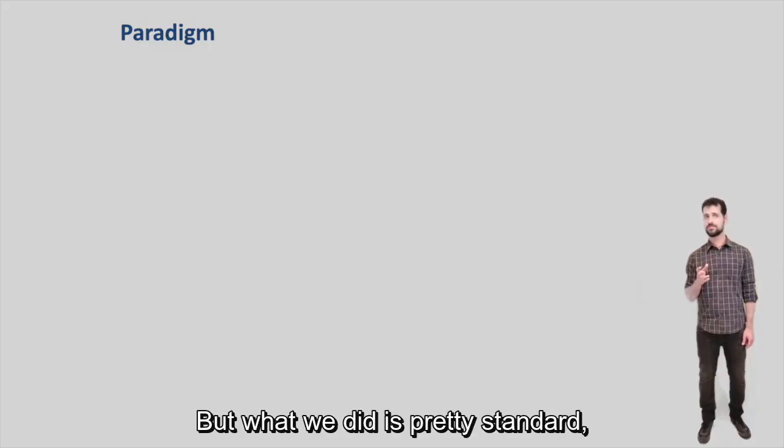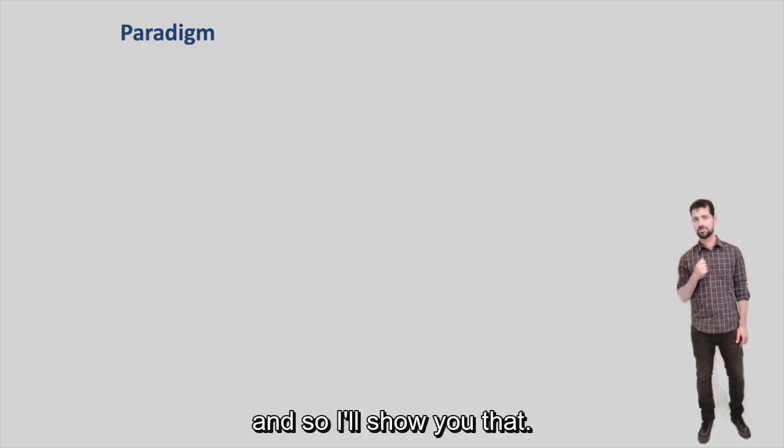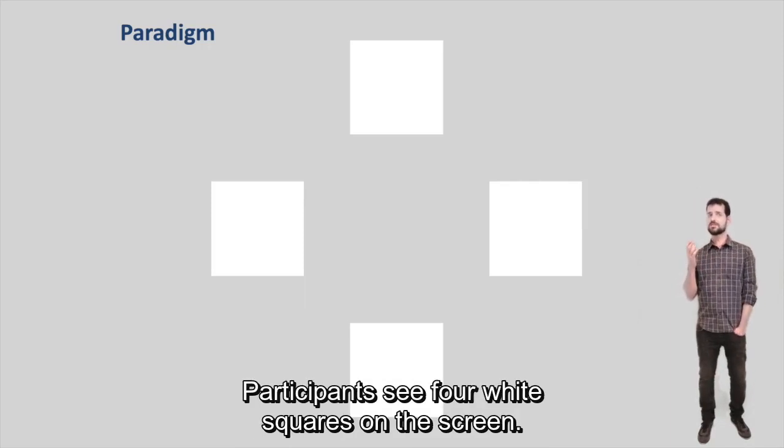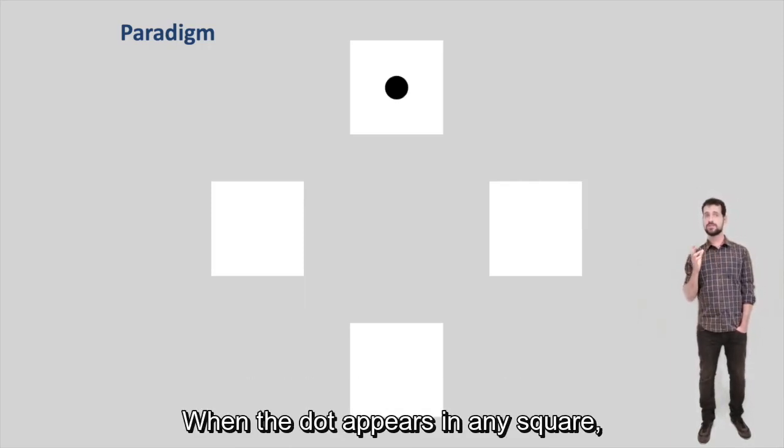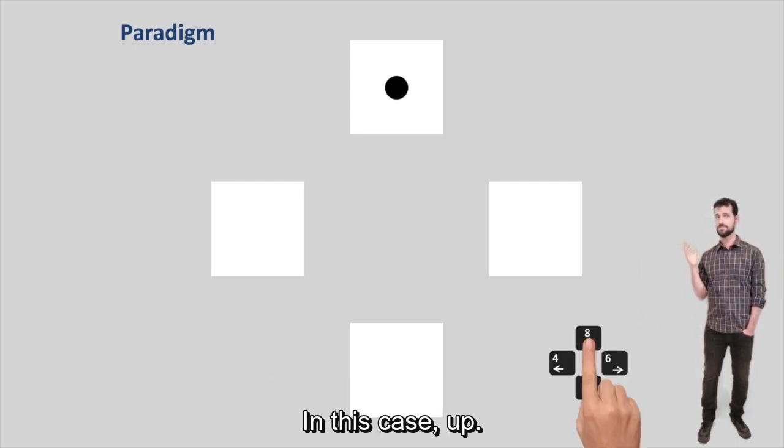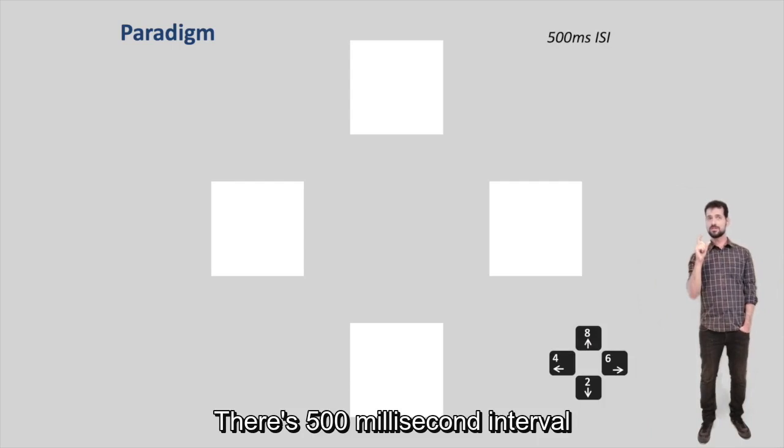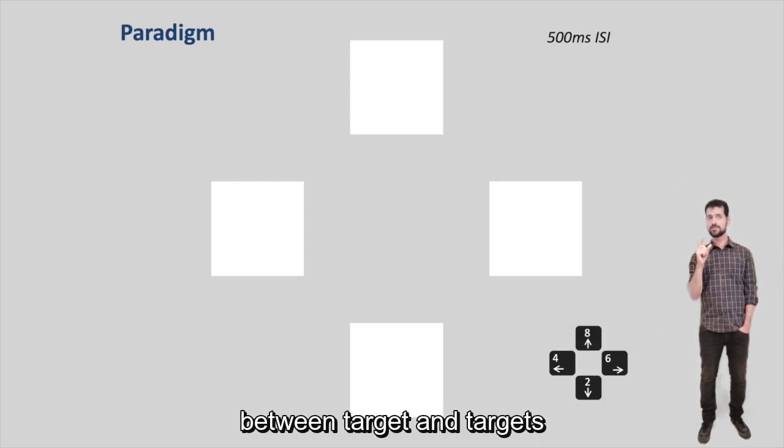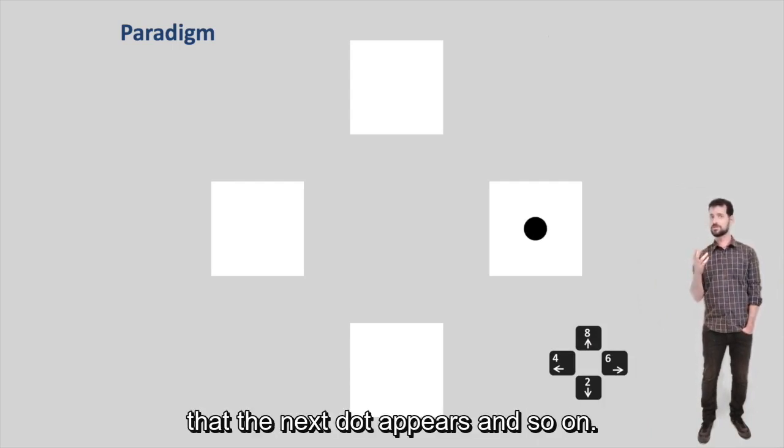There are many versions of SRT, but what we did is pretty standard, so I'll show you that. Participants see four white squares on the screen. When a dot appears in any square, they need to press the corresponding arrow key, in this case up. There's a 500 millisecond interval between target and target, then the next dot appears, and so on.